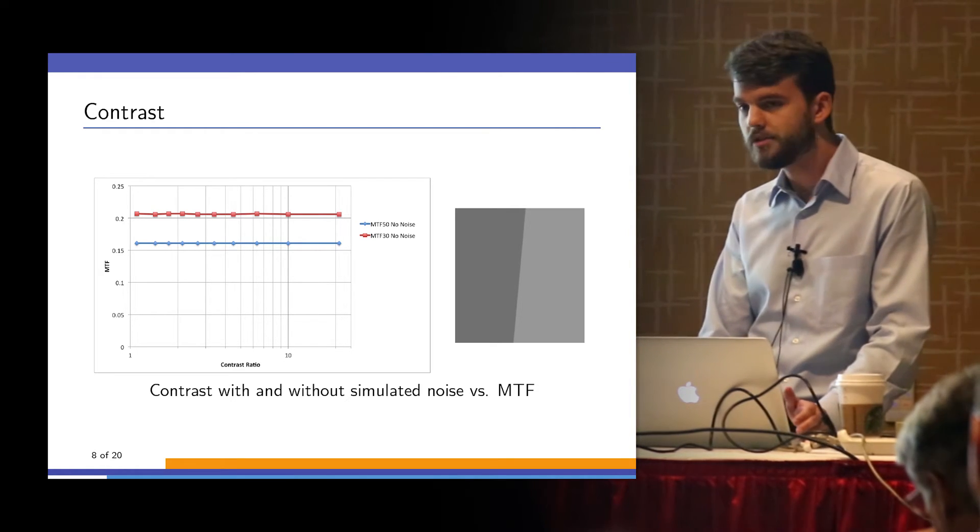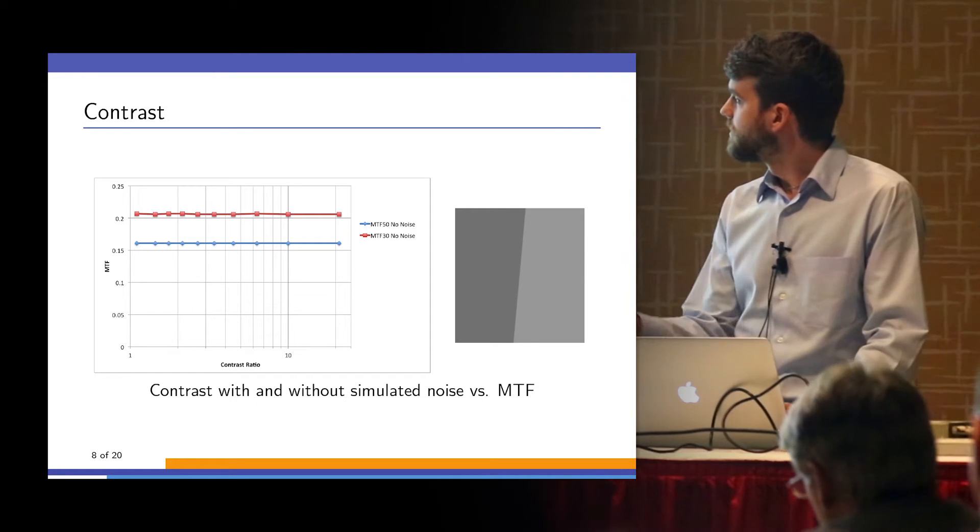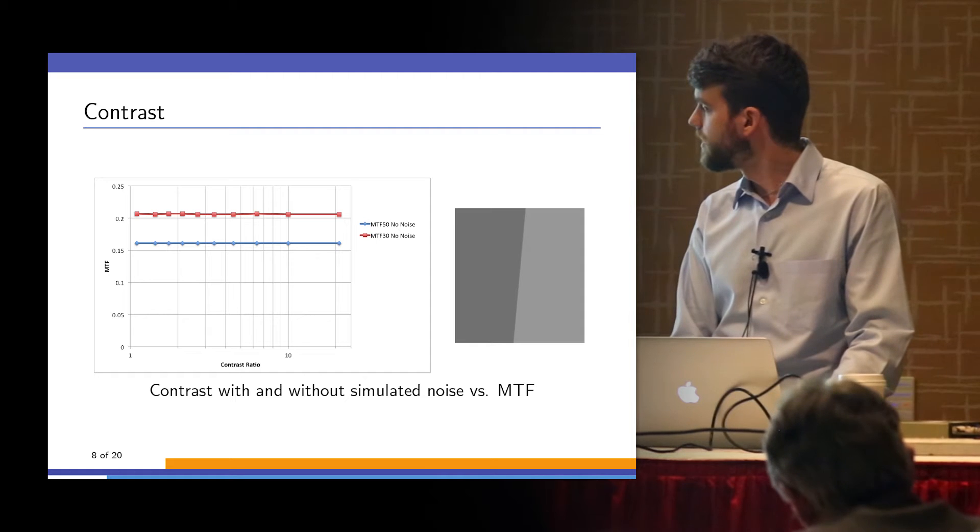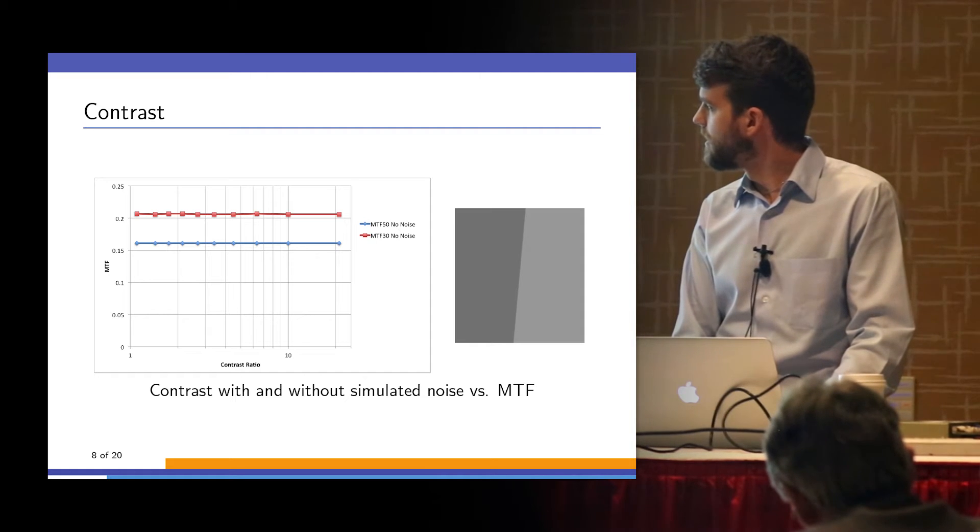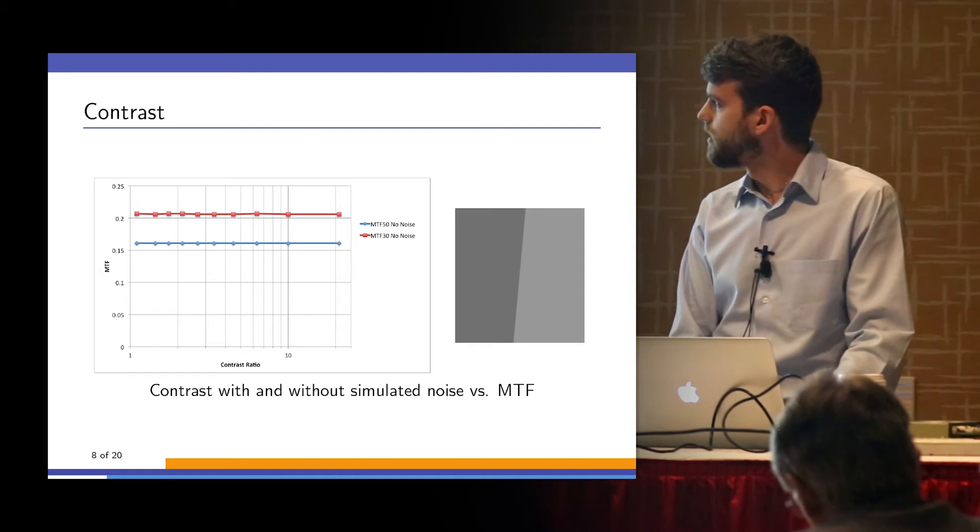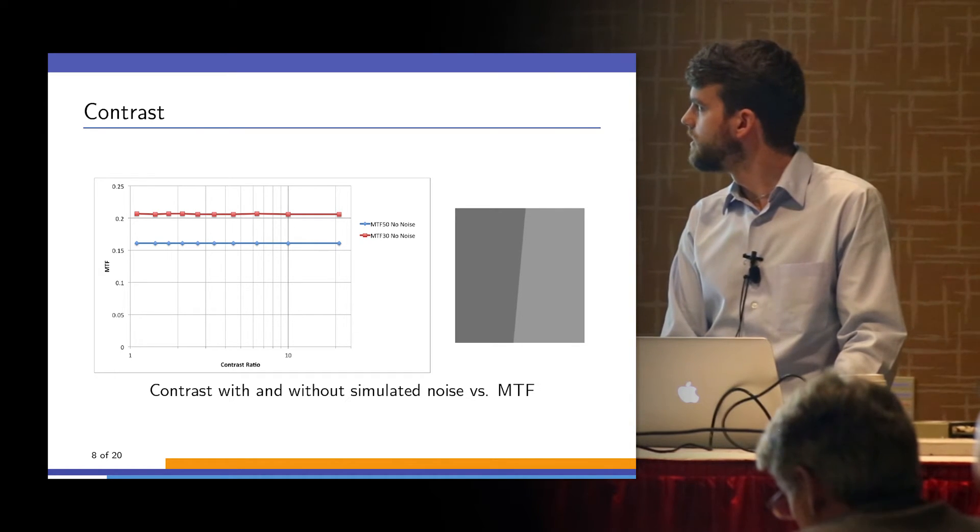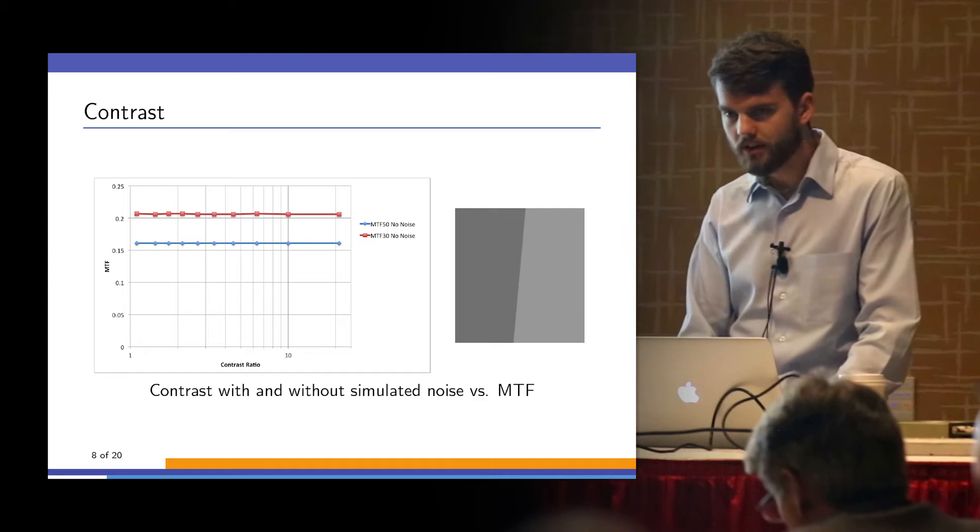Here we have proof of our assumption that mathematically, the contrast is not terribly relevant. In a system with no noise, you have pretty much constant MTF at any contrast level. The x-axis is logarithmic, going from just above one-to-one contrast up to about 22 to one.